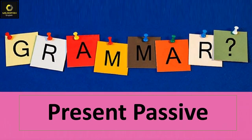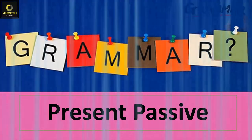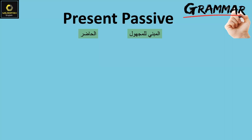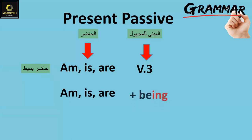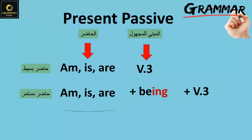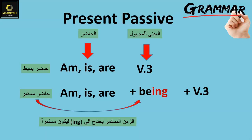Now let's see some grammar — the passive voice, meaning مبني للمجهول. For the present simple passive, we use am, is, or are depending on the subject, followed by the verb in the third form. For the present continuous passive, we use am, is, or are followed by 'being' and the past participle — we add 'being' because the continuous requires the -ing form, so we place 'being' between the auxiliary and the main verb.